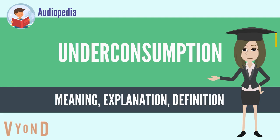Underconsumption theory narrowly refers to heterodox economists in Britain in the 19th century, particularly from 1815 onwards, who advanced the theory of underconsumption and rejected classical economics in the form of Ricardian economics. These economists did not form a unified school, and their theories were rejected by mainstream economics of the time.